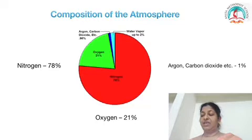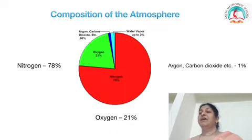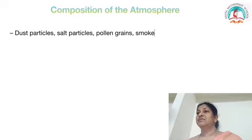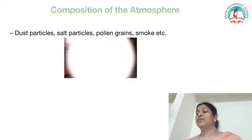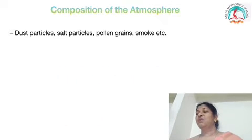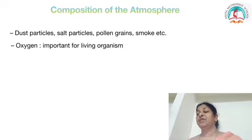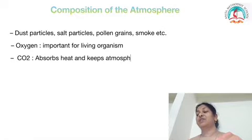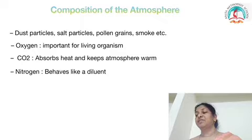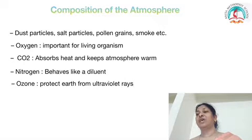The atmosphere plays a very important role in predicting weather phenomena. The other solid particles present in the atmosphere are dust particles, salt particles, pollen grains, smoke, volcanic ashes, etc. The presence of oxygen in the atmosphere is important for living organisms. Carbon dioxide absorbs heat and keeps the atmosphere warm. Nitrogen behaves like a diluent — a substance used to dilute something. And ozone protects our planet earth from ultraviolet rays, that is UV rays.